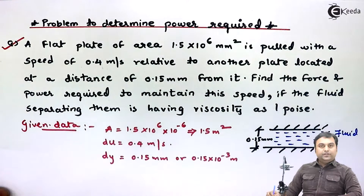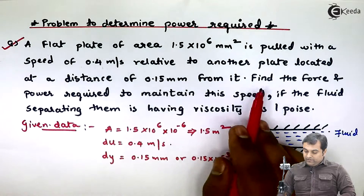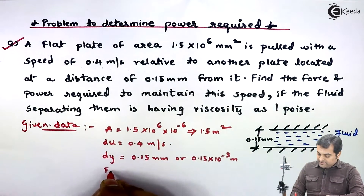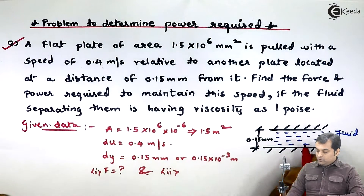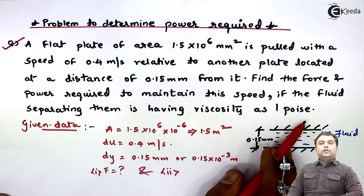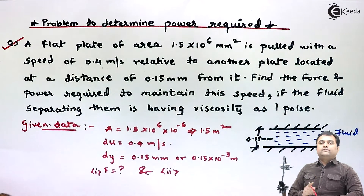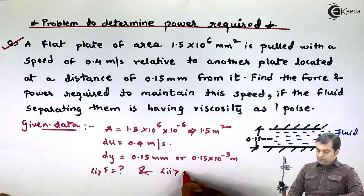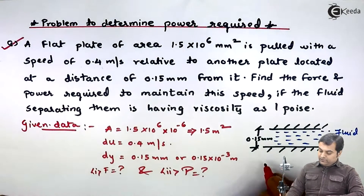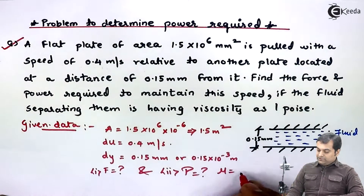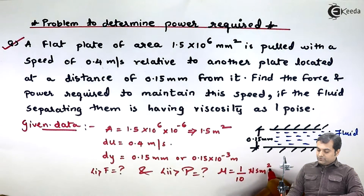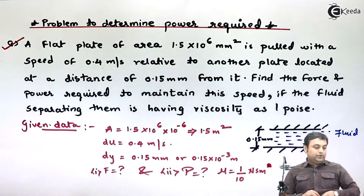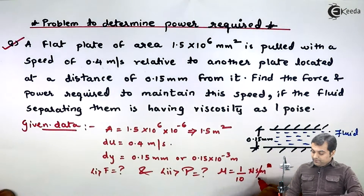The fluid is flowing between the two plates, and we have to find the force and power required for the fluid to flow. The viscosity is one poise — poise is the unit of dynamic viscosity. So μ = 1 poise, and one poise equals 1/10 Newton·second per meter square, i.e., 0.1 N·s/m².